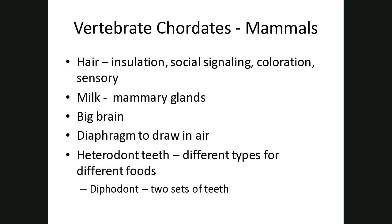Now we hit our final group of chordates: the mammals. There are several characteristics that define a mammal. All mammals have hair, and hair does more than just help with insulation or keeping the body regulated — it also has a lot to do with social signaling, it provides coloration for camouflage, and for certain animals the hair can actually serve as a sensor to detect movement or something near them.